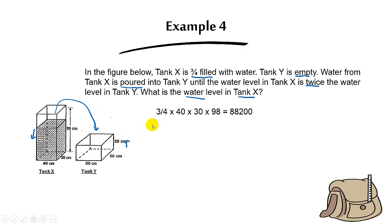First, find the initial volume of water in tank X. You take three-quarters times the base area: three-quarters times 40 times 30 times the height. You get a total volume of water in tank X of 88,200 cm³. Keep in mind that this is the total volume inside tank X.